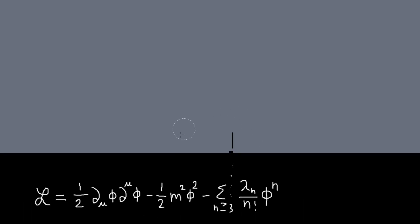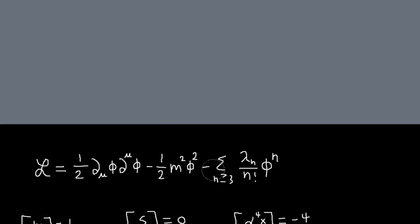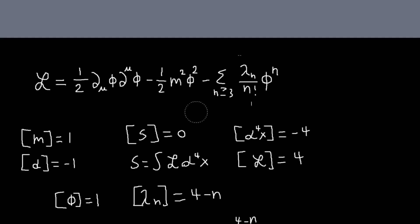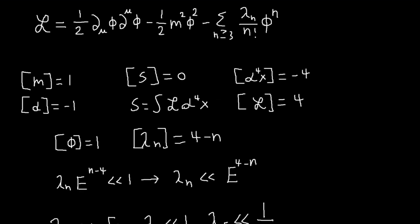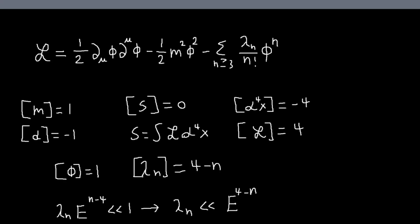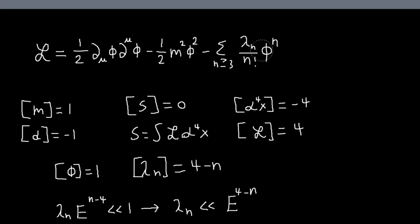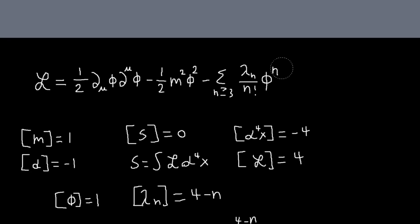And the way we're actually going to calculate things is we're going to assume that these interacting terms are small. And you can follow through David Tong's arguments.